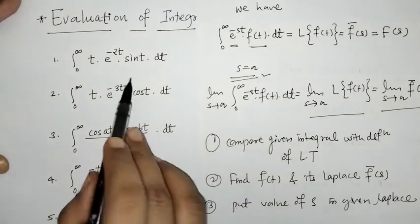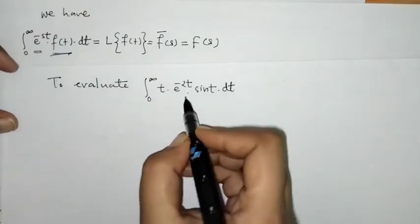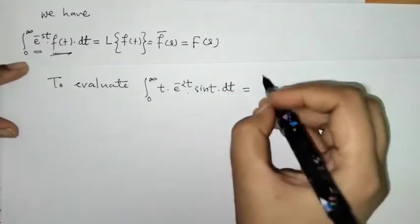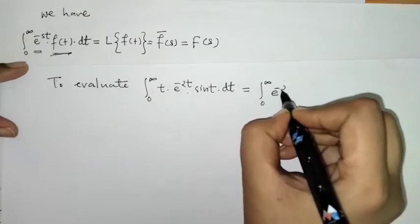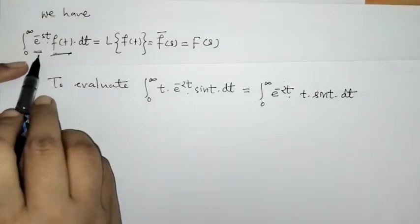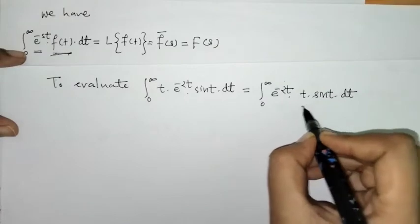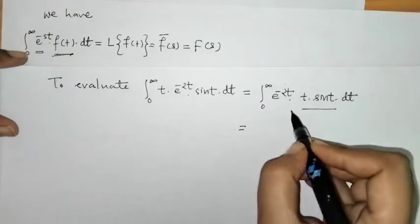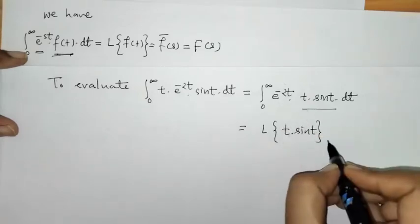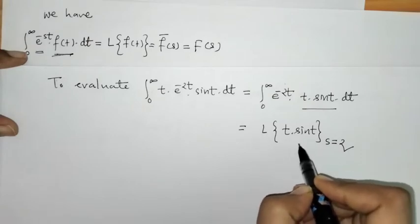Let's understand this procedure by the first example. First we write down the e raised to minus twice t term, and then we have t sine t. By comparing, we have e raised to minus twice t as e raised to minus st, and the remaining part is f of t. So we can write this as the Laplace of t sine t, and the value of s here is s equals 2. That means first we have to find the Laplace of t sine t.